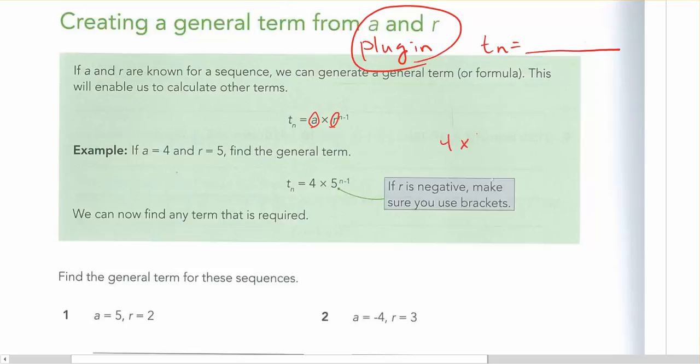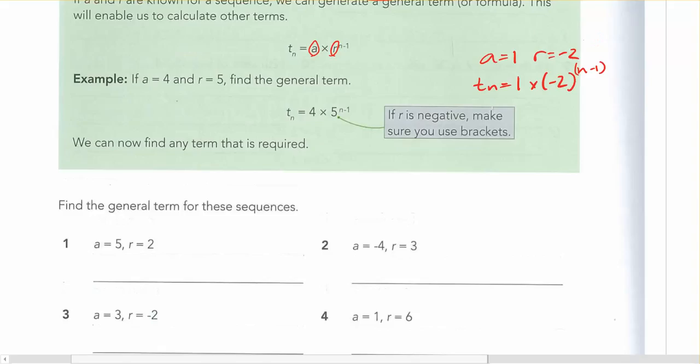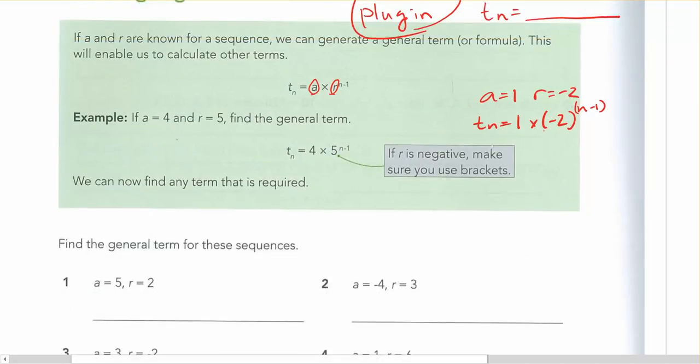For instance, if a was equal to 1 and r was equal to negative 2, you would want to do tn equals 1 times bracket negative 2, n minus 1, and put that in brackets as well. That just makes sure that the power is actually applied to that whole number with the negative included.